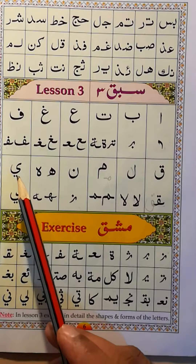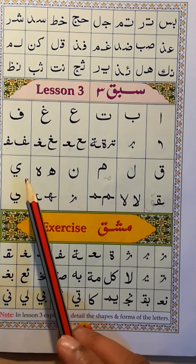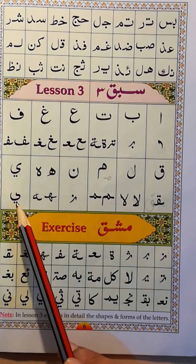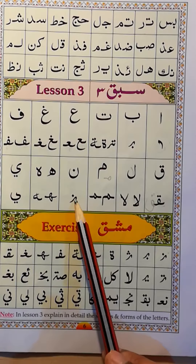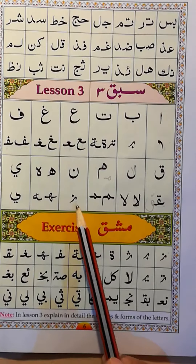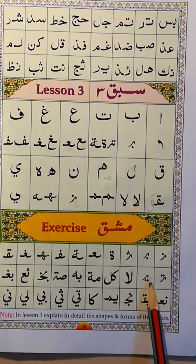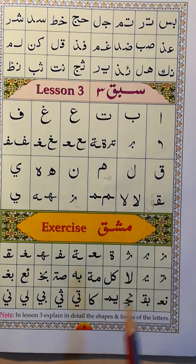This is ya. We can see ya with two dots. Ya could be like this as well. When there are two dots, it could be ya. You can see in the exercise — this is ya, this is ya.